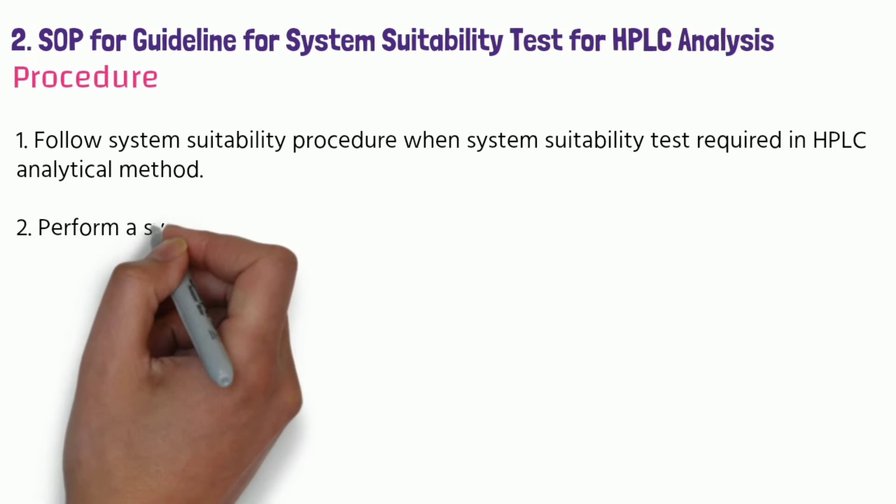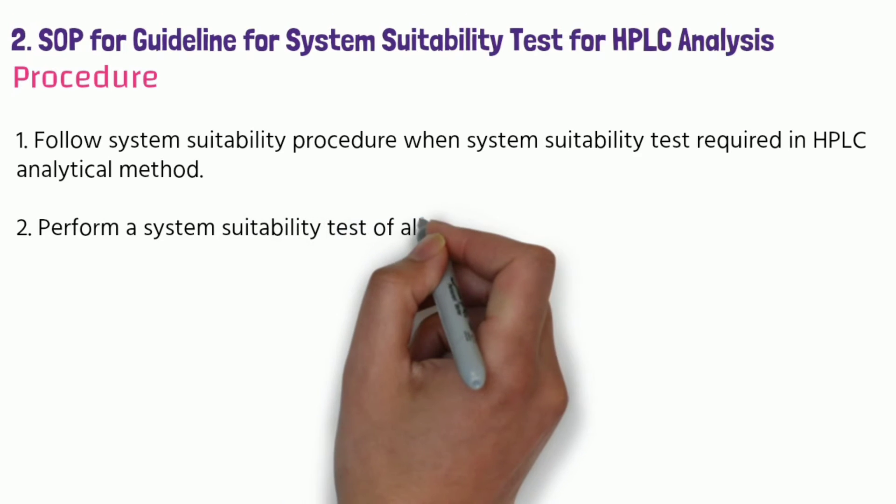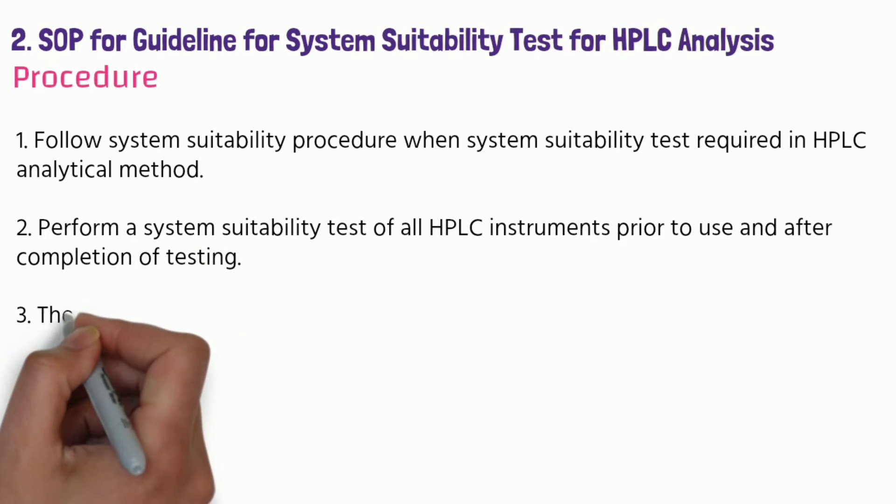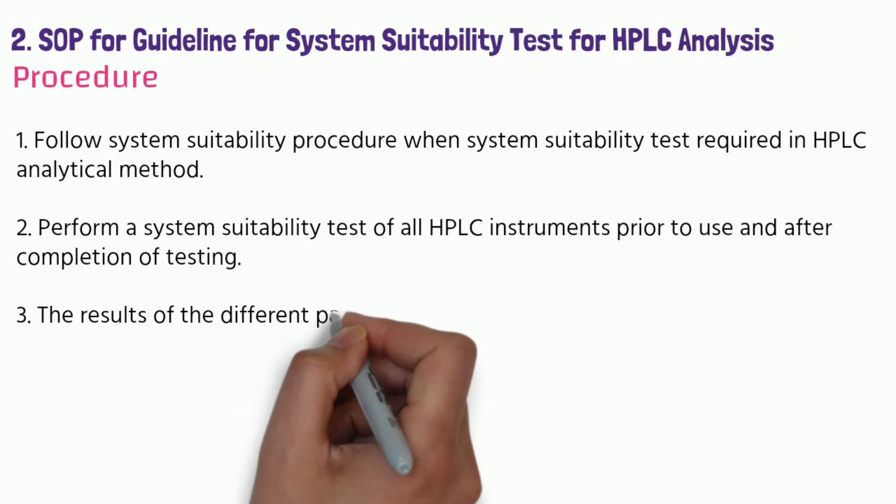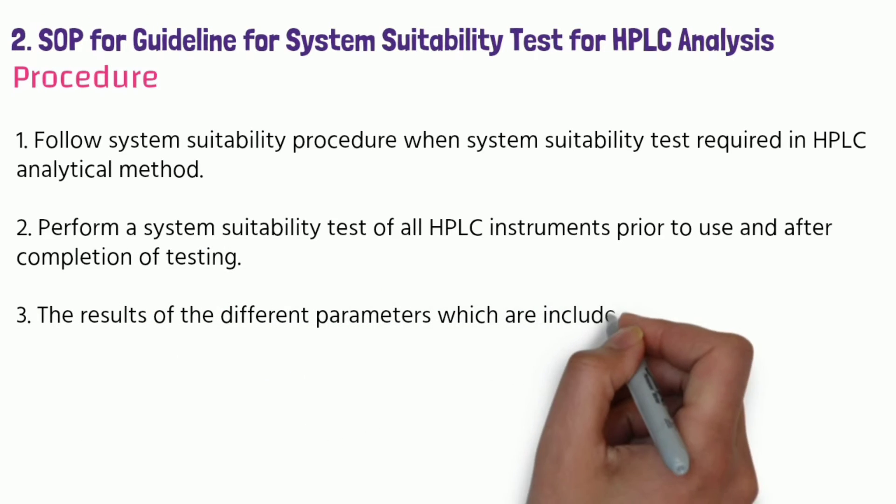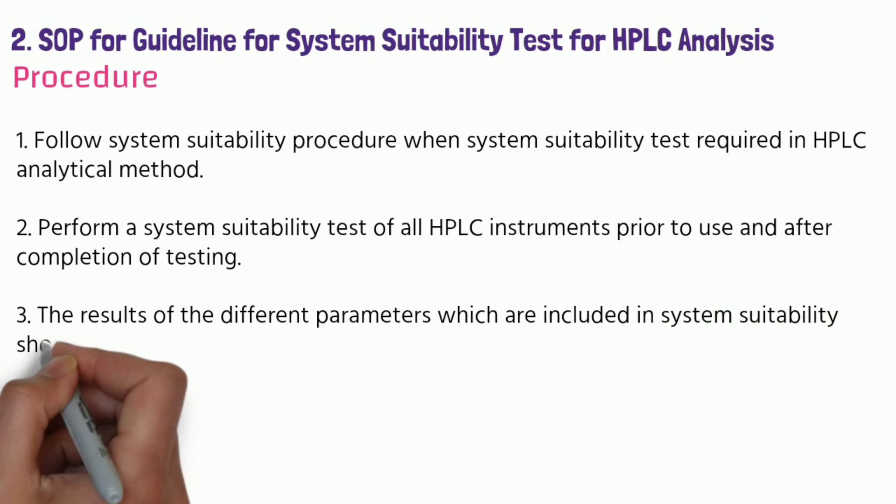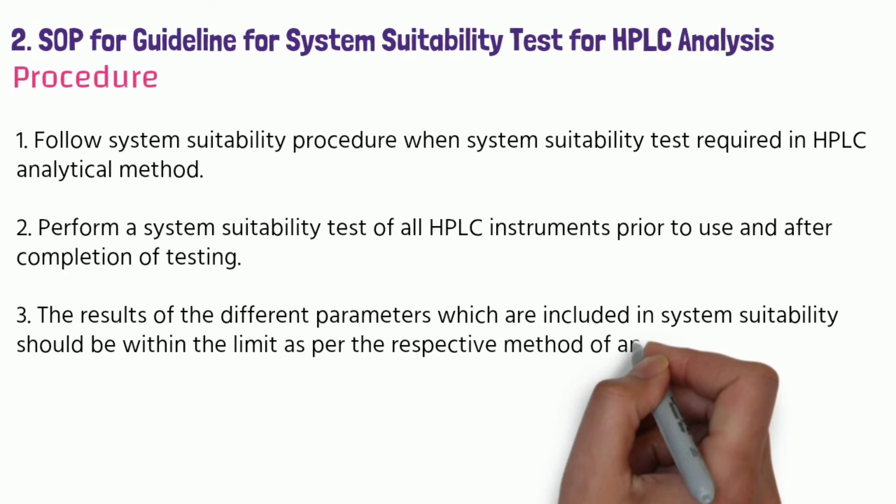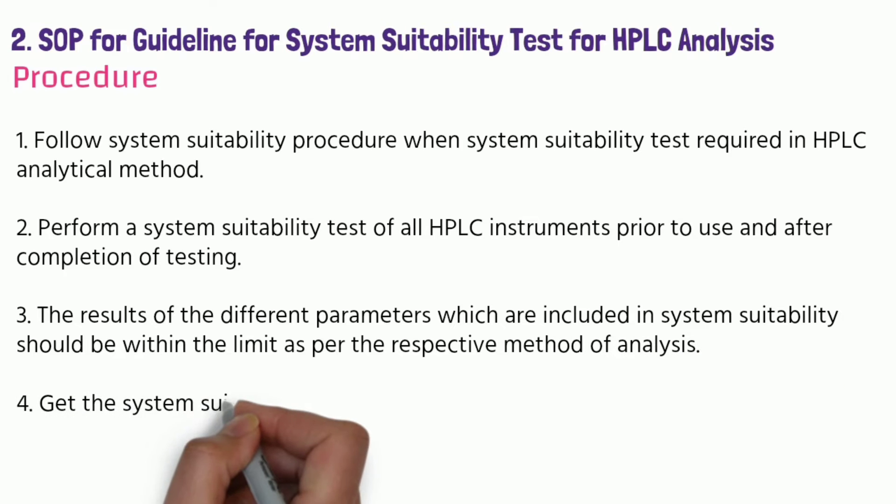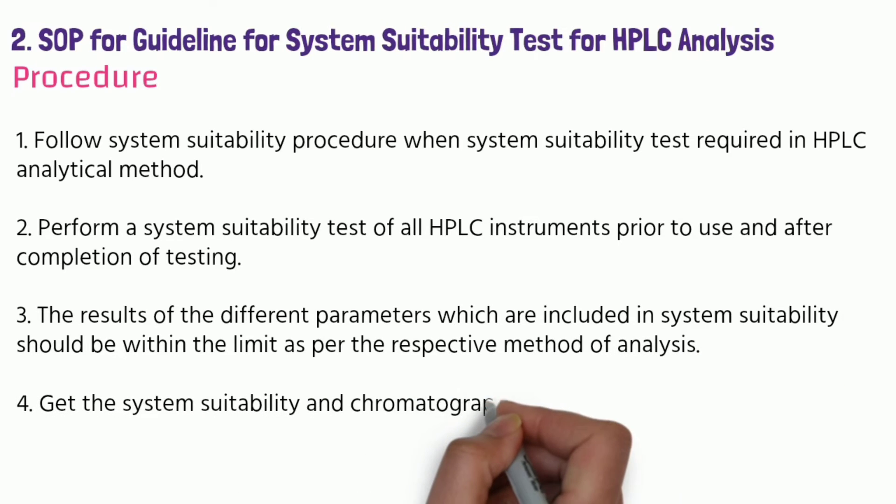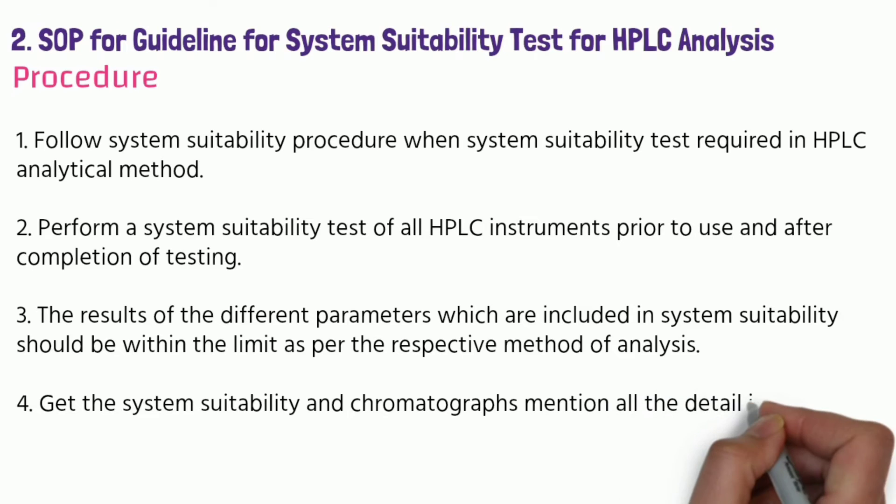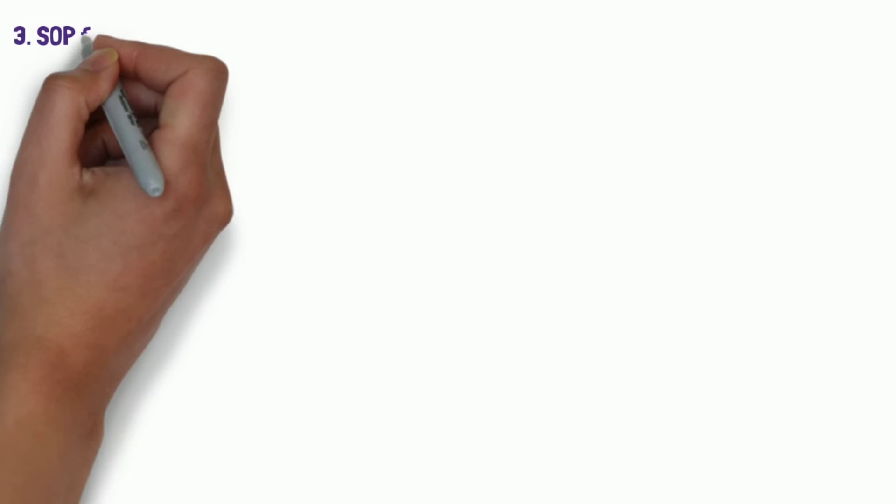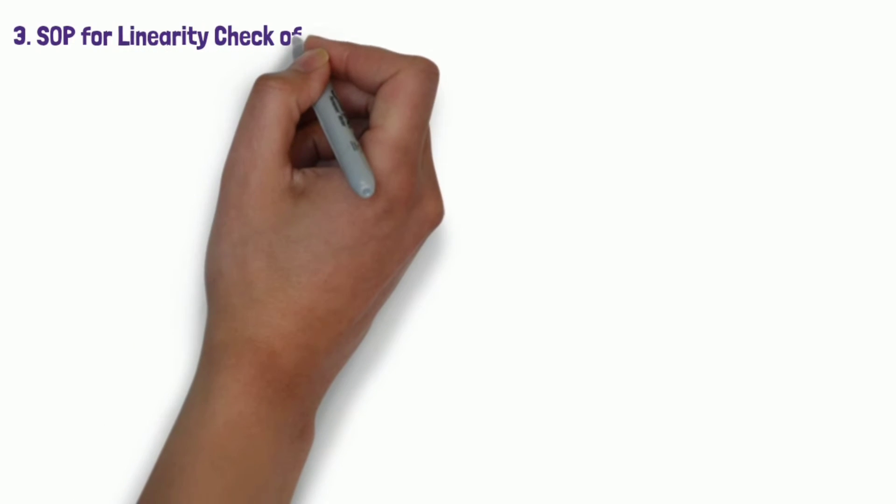Perform a system suitability test of all HPLC instruments prior to use and after completion of testing. The results of different parameters which are included in system suitability should be within limit as per respective method of analysis. Get the system suitability and chromatographs. Mention all the details in respect to product data sheet.